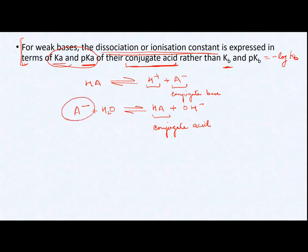So for the base, we do not compute the dissociation and ionization constant as Kb or pKb — which is the base ionization constant — but instead we compute it in the form of pKa or Ka of the conjugate acid.